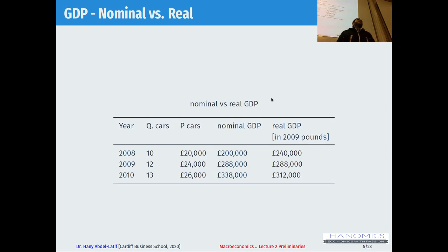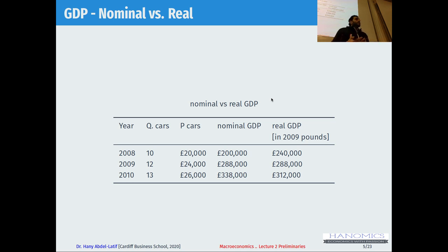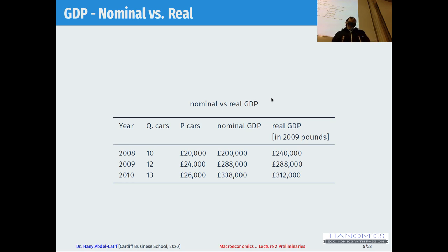Here's a very simple example showing an economy that produces only cars, with quantities for 2008, 2009, and 2010, and prices on the third column. To calculate nominal GDP, you simply multiply quantities times prices for that year. For real GDP, you fix the prices — in this example I used 2009 prices. So I multiply quantities in 2008 by the prices of 2009, same for 2009 and 2010. That gives the real GDP. Because I used 2009 prices, the nominal GDP and real GDP are the same in 2009.